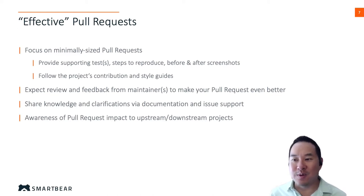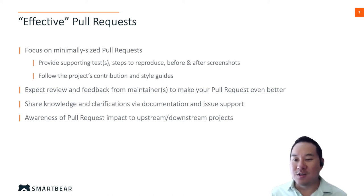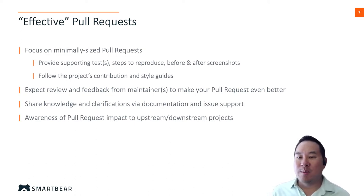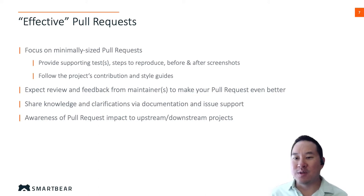Things that go into an effective pull request include: follow the product style guide, include the supporting tests for the feature you are adding or fixing, provide documentation to recreate its effectiveness, and ideally include before and after screenshots. All of this work is done to make it as easy as possible for maintainers and reviewers to evaluate your proposed changes.